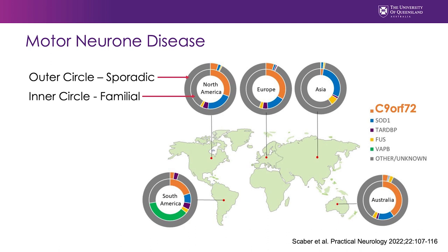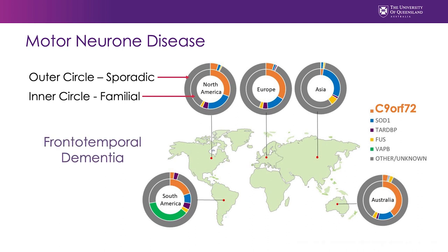Therefore, these mutations aren't necessarily carried from parent to child. The other thing to recognize is that the C9ORF72 gene is not just observed in motor neuron disease — in fact, a very large proportion of people who present with frontotemporal dementia also present with a mutation in this gene. Discoveries around the association between C9ORF72, motor neuron disease, and dementia have led to our improved understanding that MND actually exists along a spectrum of degenerative diseases that can impact thinking, and we now talk about people existing across a spectrum between MND and FTD.